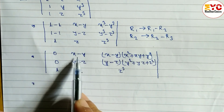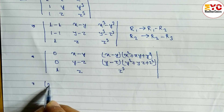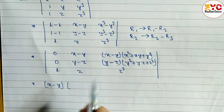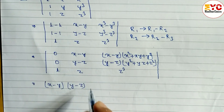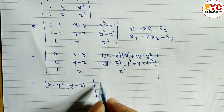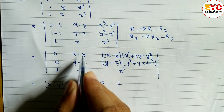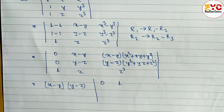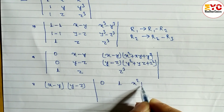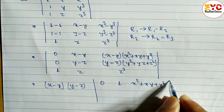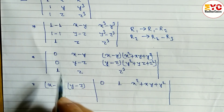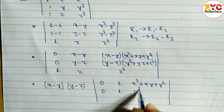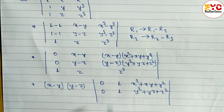From the first row we can take (x minus y) as a common factor. Similarly from the second row we can take (y minus z) as a common factor. From the third row we cannot take any common element. After taking common, the first row becomes: 0, 1, x² + xy + y². The second row becomes: 0, 1, y² + yz + z².